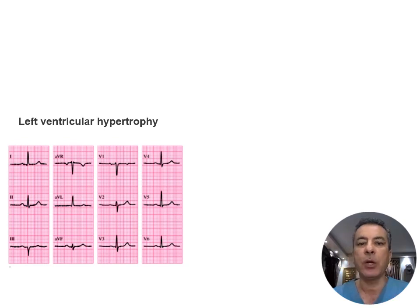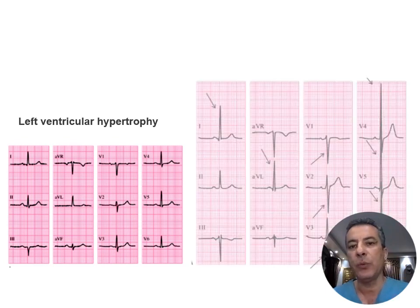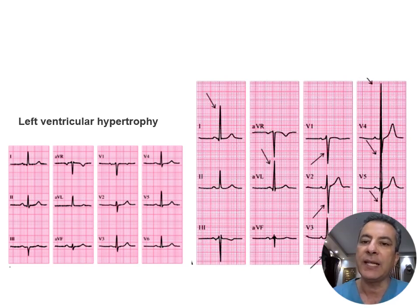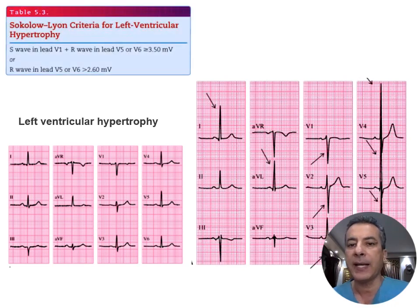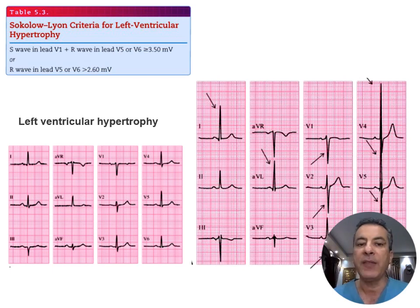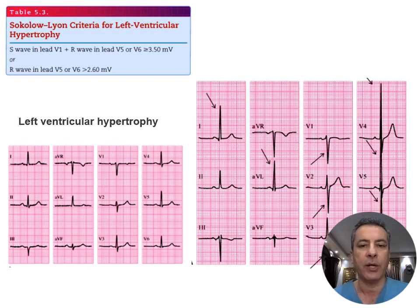For left ventricular hypertrophy, there is a deep S wave in lead V1 and a prominent R wave in lead I, V5, and V6. The Sokolow-Lyon criteria are employed: if the sum of the S wave in V1 and the R wave in either V5 or V6 exceeds 3.5 mV, it confirms LVH. Additionally, if the amplitude of the R wave in either V5 or V6 exceeds 2.6 mV, it also confirms the diagnosis of left ventricular hypertrophy.